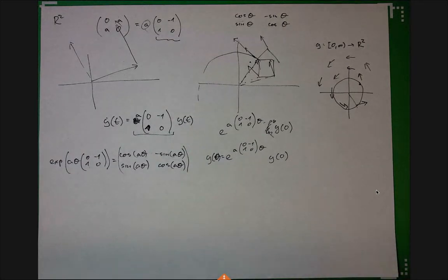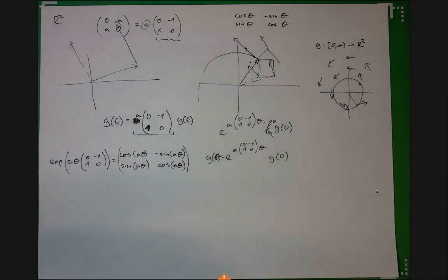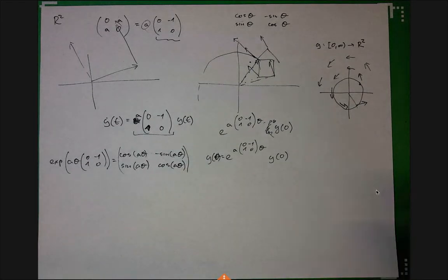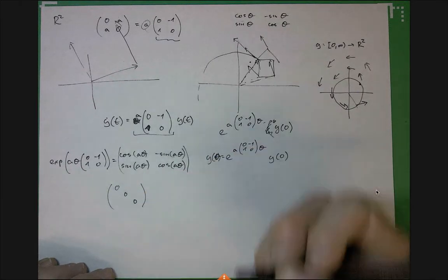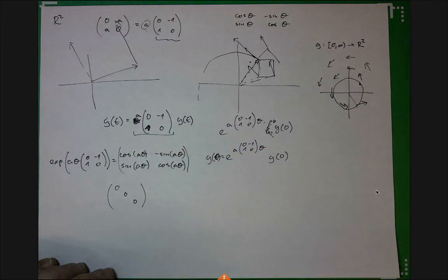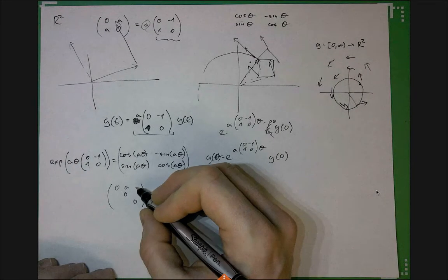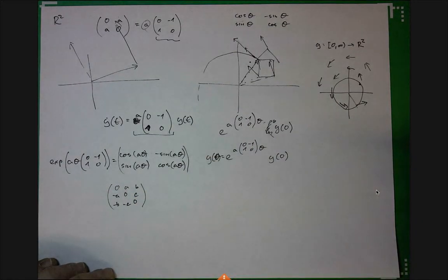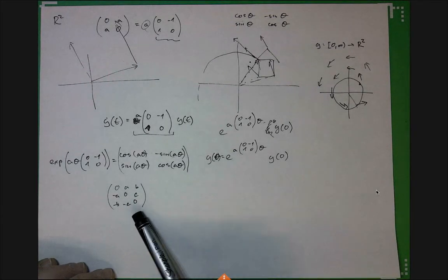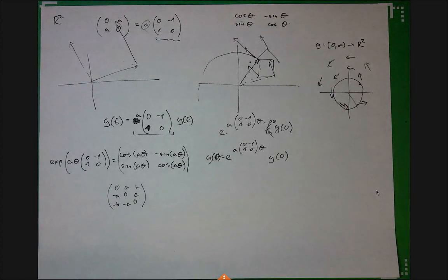This will come up in simulation of rigid bodies. Rigid bodies in space can move with translation, giving linear velocity, and they can also rotate, giving angular velocity. That instantaneous angular velocity can be exactly represented by a skew symmetric matrix. In 3D, a skew symmetric matrix has 3 degrees of freedom — entries A, B, C, -A, -B, -C — and this is exactly the axis of rotation.